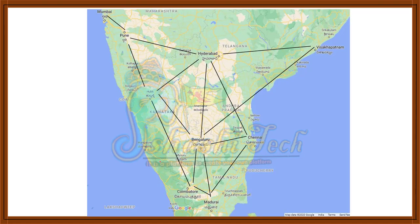One more example is Google Maps, which is an example for a graph. Here, based on the shortest distance, you are going to travel. Suppose you want to travel from Madurai to Mumbai — there are many paths. You will select the shortest path. Google Maps is an example for the graph.